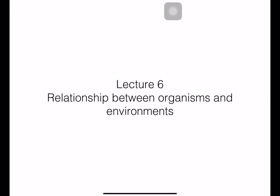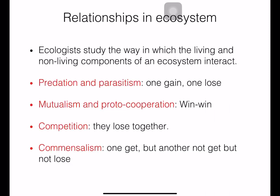In lecture six, we talk about the relationship between the organism and the environment. In the ecosystem, these relationships can be classified into many types. Ecologists study the way that living things and non-living components live together, but first we will talk about the relationship between organisms and organisms.